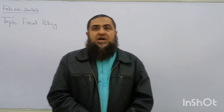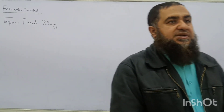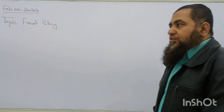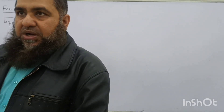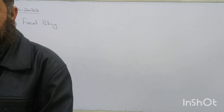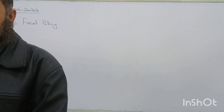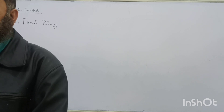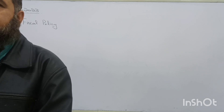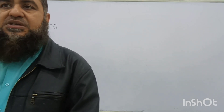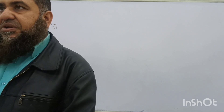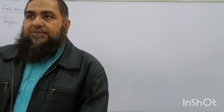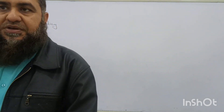Today we are going to start our macroeconomic policies. As we said in our previous lessons, there are macroeconomic objectives of the government. One of them is national income growth, another is full employment or low unemployment. Third is price stability, then balance of payment equilibrium, and finally stability in the exchange rate of the country. Some books also include fair distribution of income in the economy.